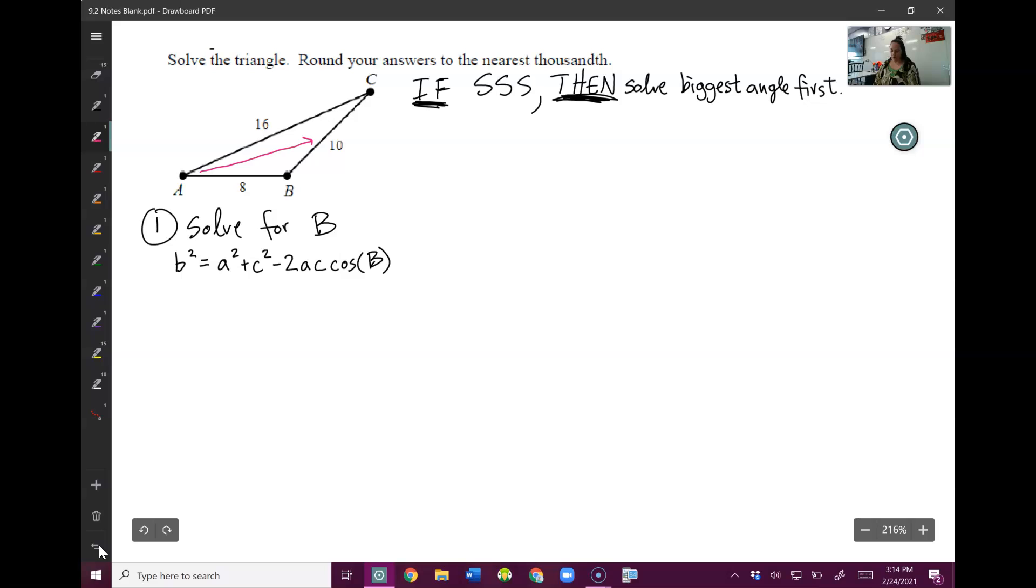So across from a is little a. Across from b is little b. And across from c is little c. So let's fill in what we know. I know little b is 16. I know little a is 10. I know little c is 8. Repeat those two that I just did. And then cosine, I do not know, capital B.